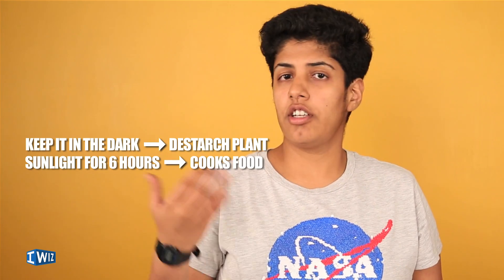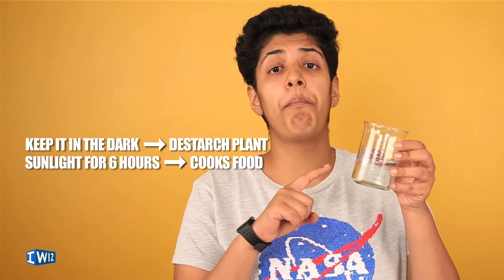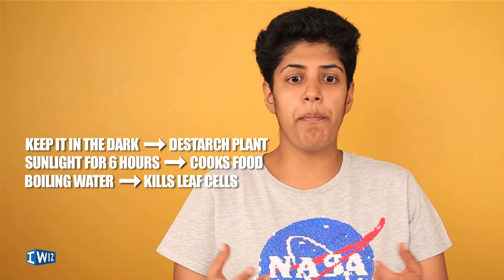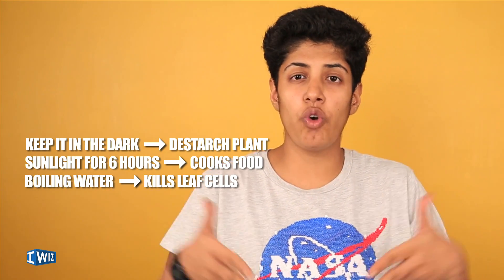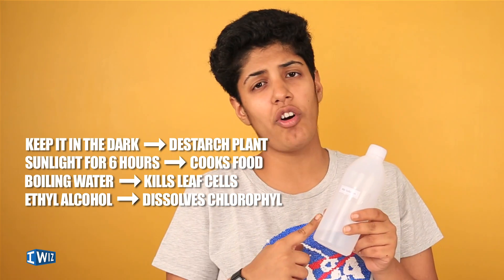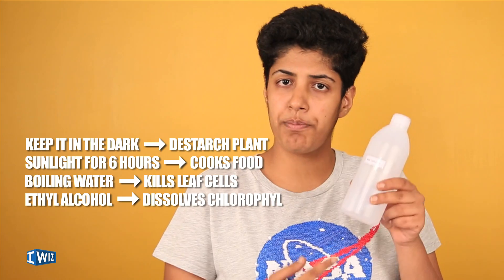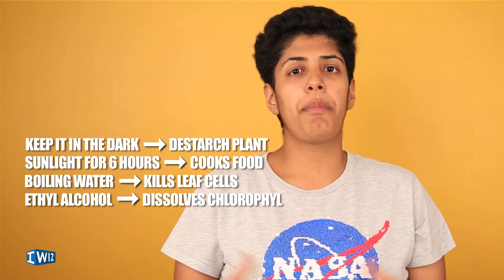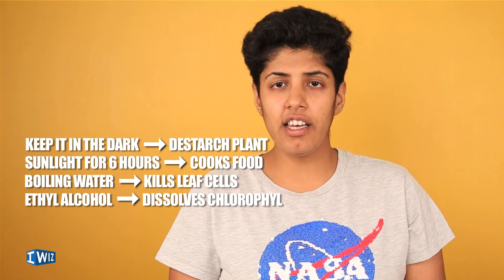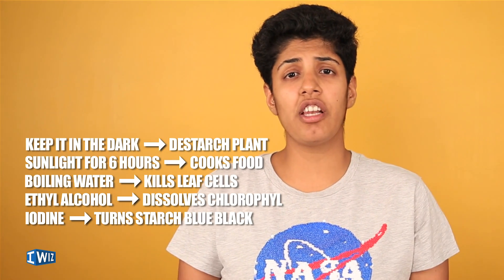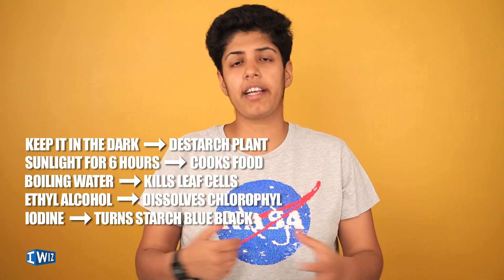To recap the experiment: we took a starved leaf, let it make food for six hours, then put it in boiling water. The reason for boiling water is twofold — it kills the cells and makes the cell wall more permeable. Next we used ethyl alcohol to dissolve all the chlorophyll so the leaf becomes as colorless as possible. Water is a polar solvent that dissolves a lot of things, but chlorophyll doesn't dissolve in water, so we use ethyl alcohol. Finally we applied iodine, and all the starch present reacted with the iodine turning it bluish-black.